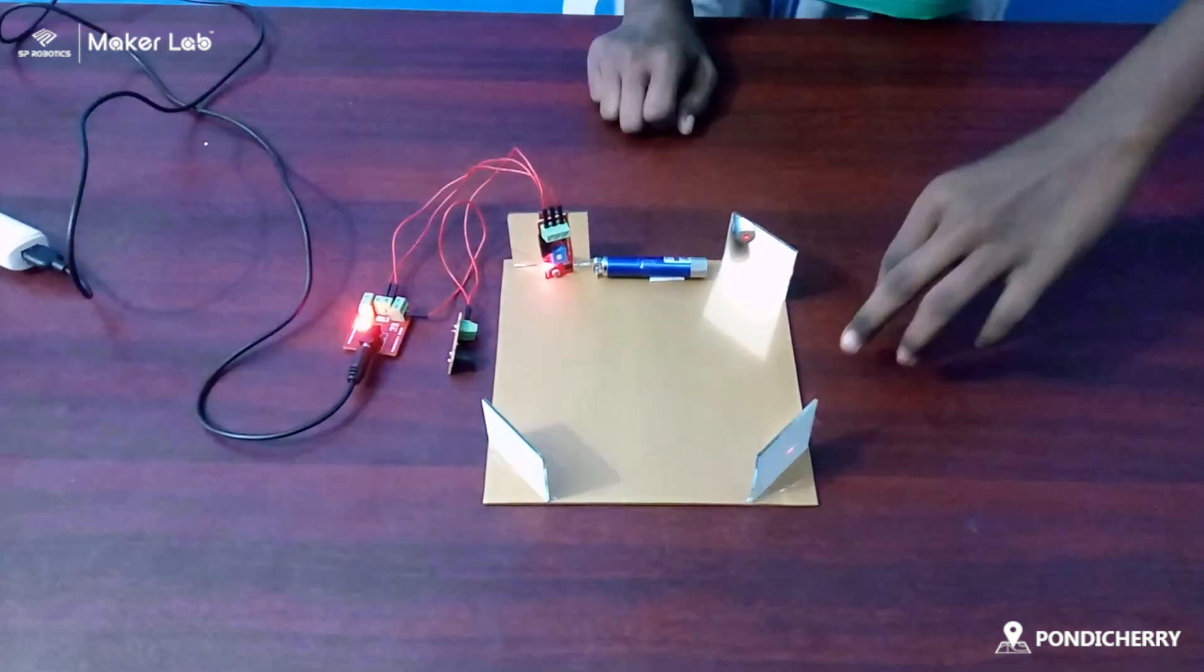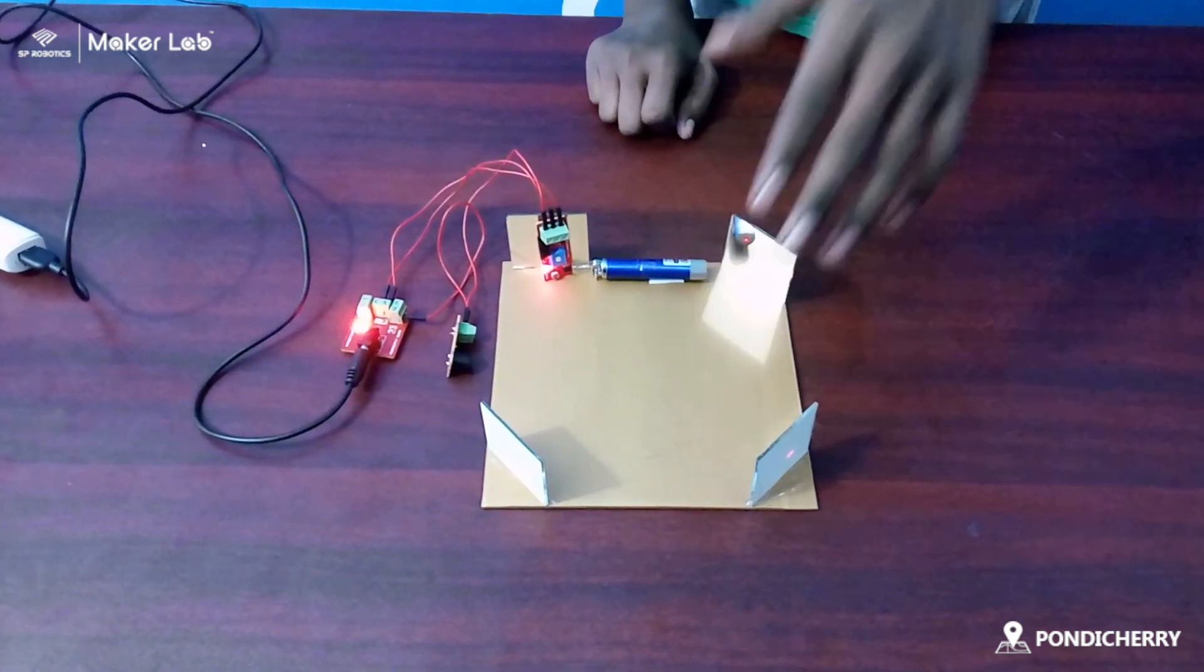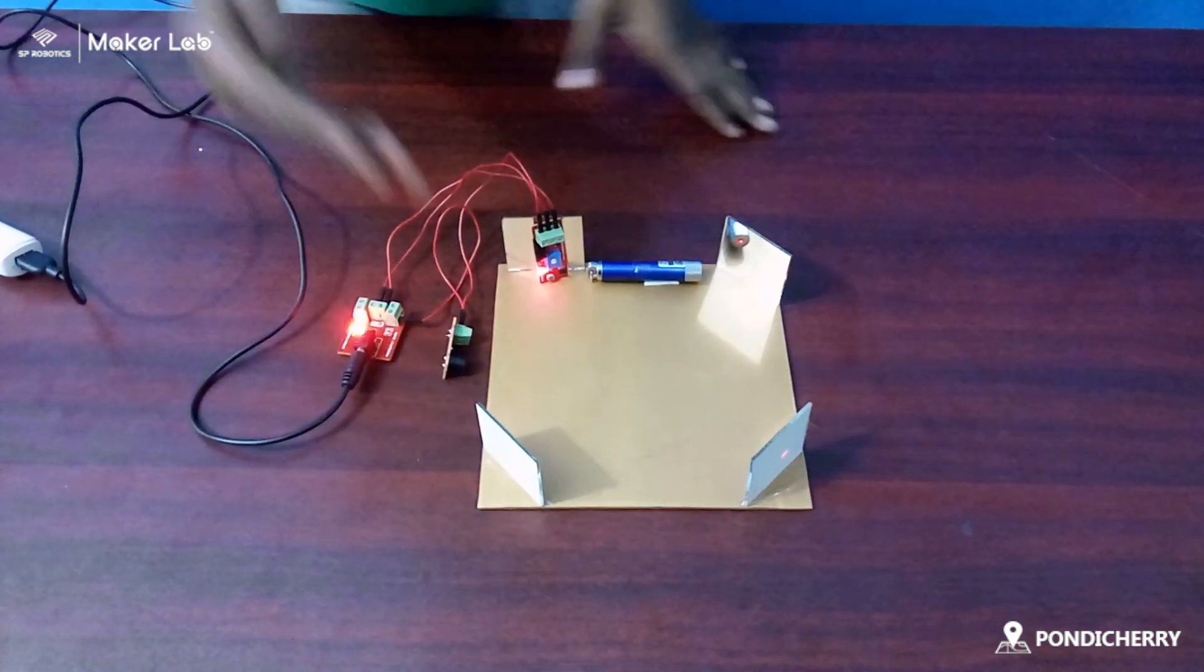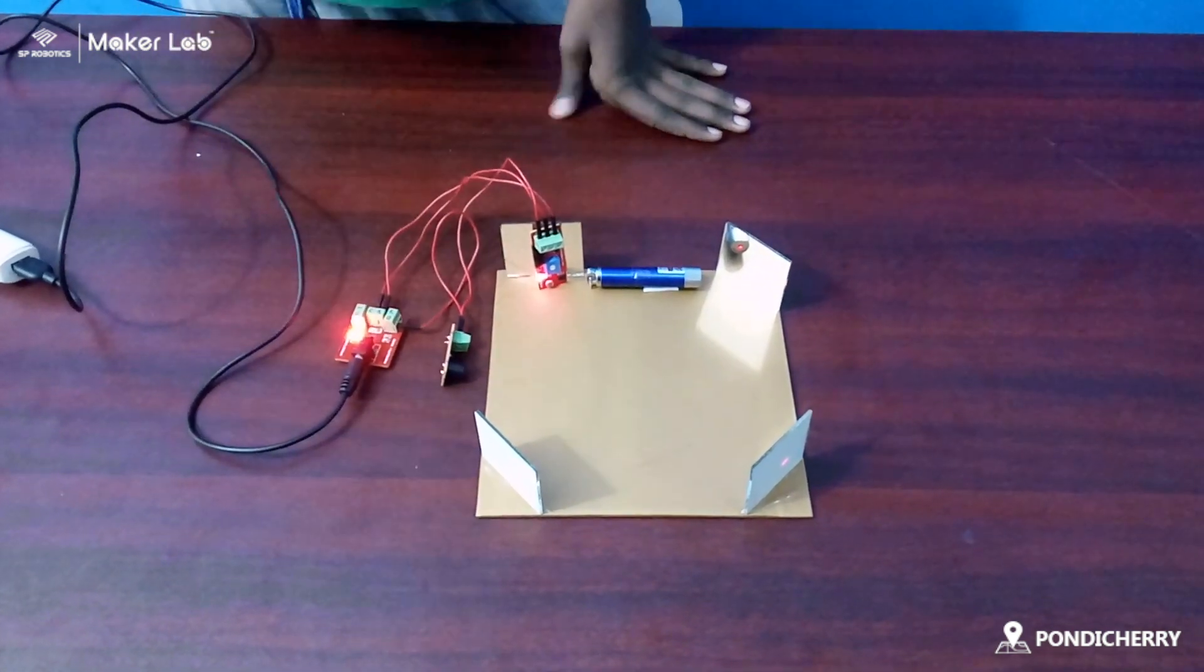After that, when any thief enters into this portal, the light is being blocked by his body. When the light does not reach this, automatically the buzzer buzzes.